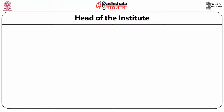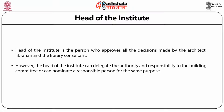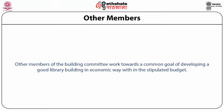Head of the Institute. The Head of the Institute is the person who approves all the decisions made by the architect, librarian, and the library consultant. However, the Head of the Institute can delegate the authority and responsibility to the building committee or can nominate a responsible person for the same purpose. Other members of the building committee work towards a common goal of developing a good library building in an economical way within the stipulated budget.